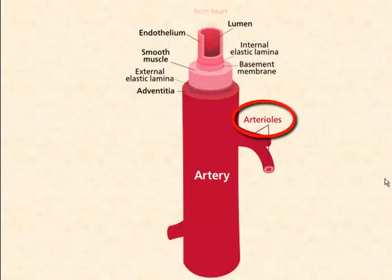Arteries branch into smaller arteries called arterioles. They're less elastic and somewhat contractile. Arterioles provide a vital function in that they are involved in blood pressure control. The lumen, or inside of the blood vessel, can narrow or expand due to stimulation of muscles surrounding them by the nervous system. This homeostatic mechanism helps regulate blood pressure and will be covered later.